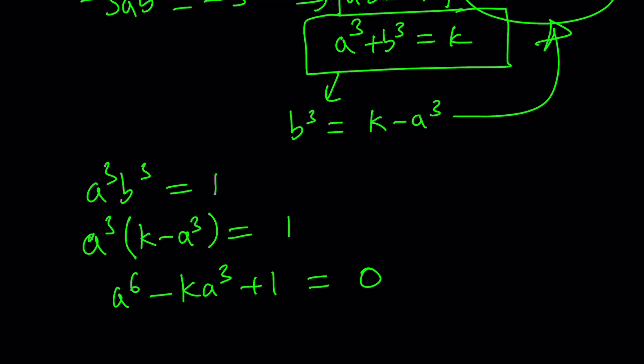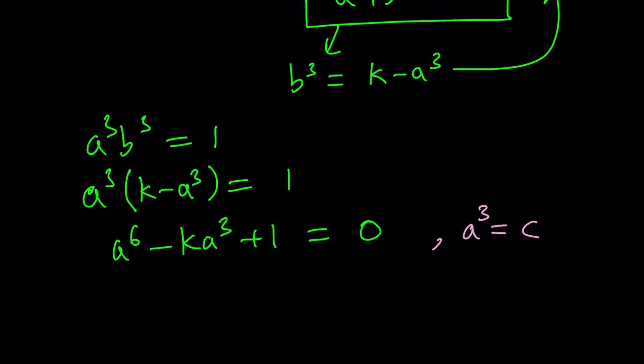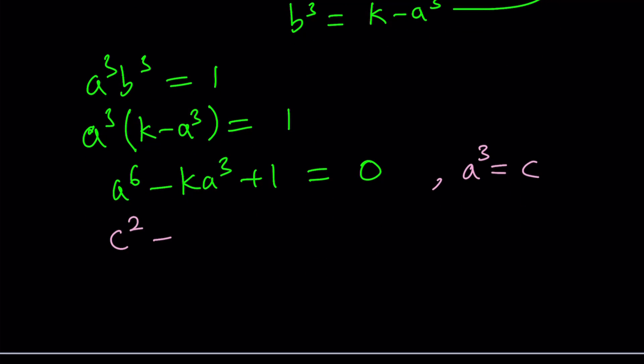Now, remember, we're going to solve for a, and a and b are interchangeable, by the way, from symmetry. So we're going to find two solutions because this is quadratic in a cubed. So let's go ahead and use substitution one more time and call a cubed c. And that gives us c squared minus kc plus 1 equals 0.